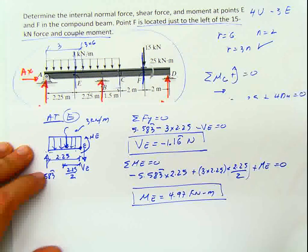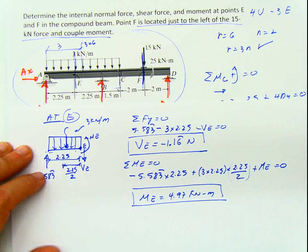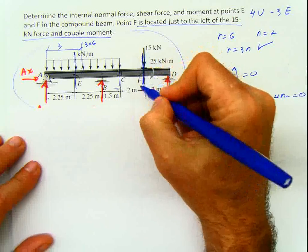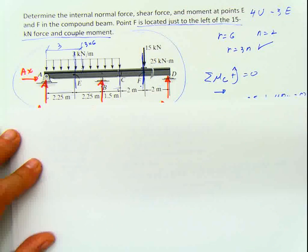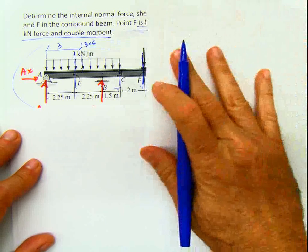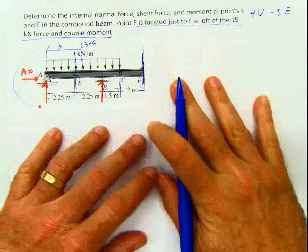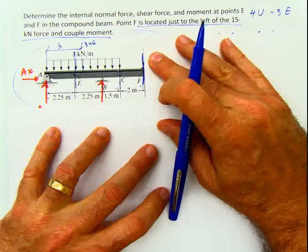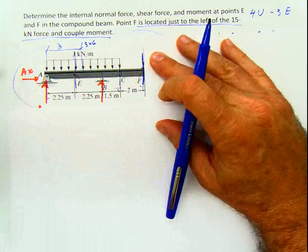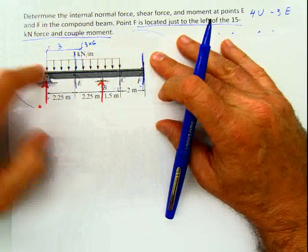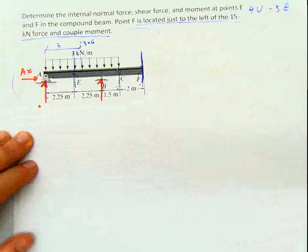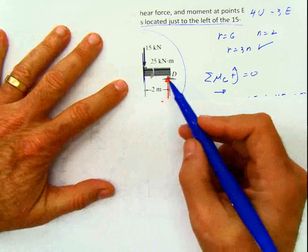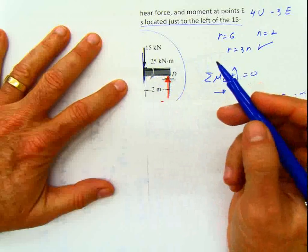That completes the first part of the problem. Now for the second part at point F. Since the problem says F is located to the left of the force and moment, using the right side means the force and moment would not be excluded — they are included. I could use the left side, but looking at the right side with force, force, distance, I'll use the right side and include the force and moment.